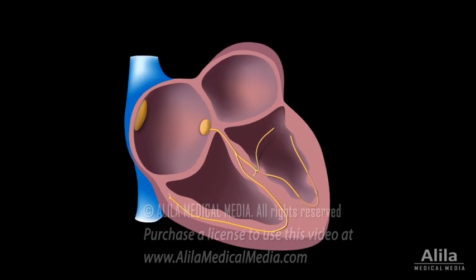In normal conduction, the three fascicles start to depolarize simultaneously. In the first 10 milliseconds, the anterior and posterior vectors move in nearly opposite directions, cancelling each other.